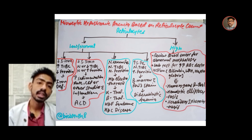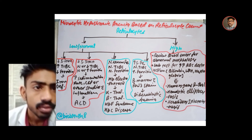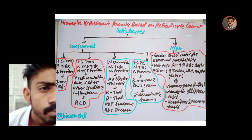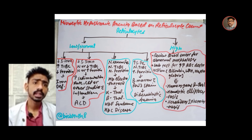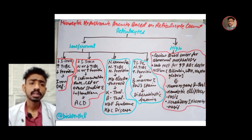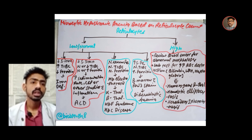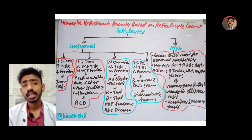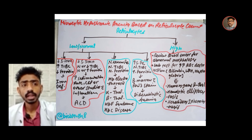When reticulocyte count is high, this indicates RBC destruction. A peripheral blood smear review is warranted. Increased bilirubin, decreased haptoglobin, and increased LDH support hemolysis. The diagnosis may be homozygous beta thalassemia, hereditary elliptocytosis, or hereditary spherocytosis.